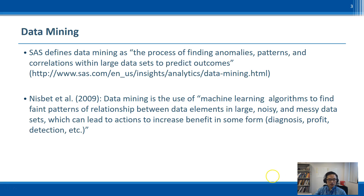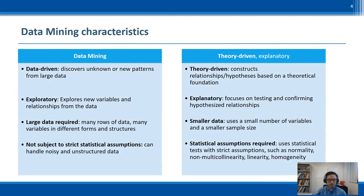One common confusion is what differences exist between data mining research and other types of research. I summarize three major characteristics of data mining here. First, data mining is a data-driven method. We use data mining to discover unknown or new patterns from large data. But it is different from theory-driven research, which tends to focus on relationships hypothesized from existing theories or theoretical foundations. In data mining, we do not have hypotheses.